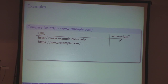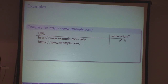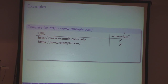Next URL: what about HTTPS www.example.com? It's using a different protocol — HTTPS not HTTP — so the scheme is different and the port as well. Even though the port isn't given explicitly, for one it's 80 and for the other it's 443. So this is not the same origin.